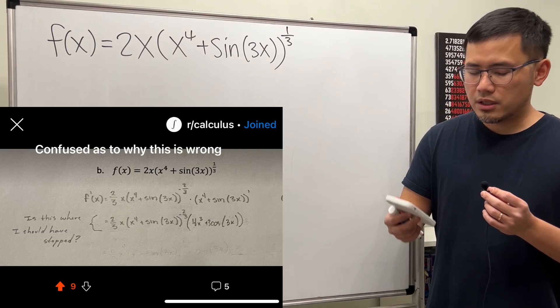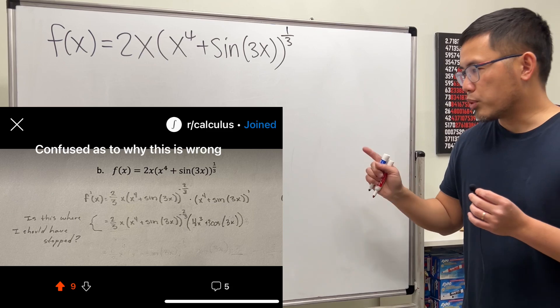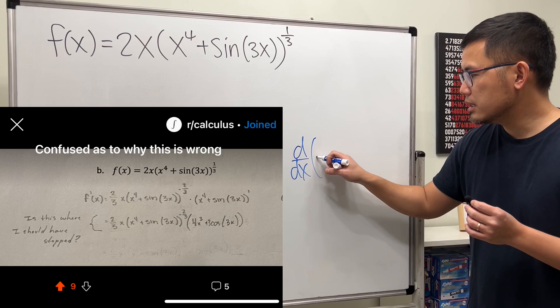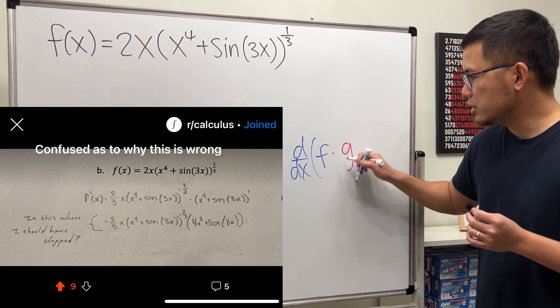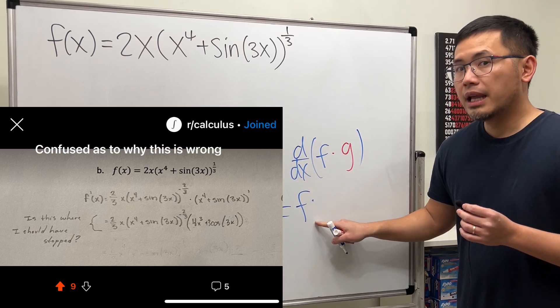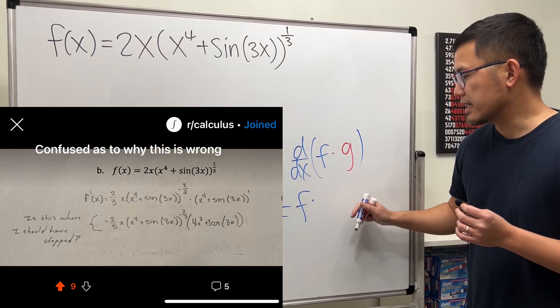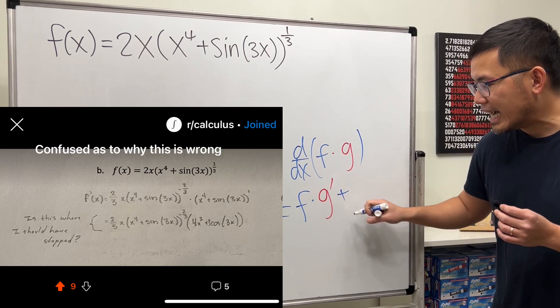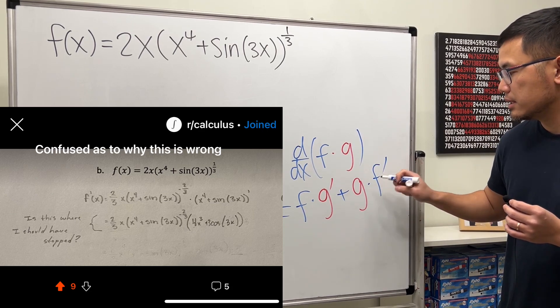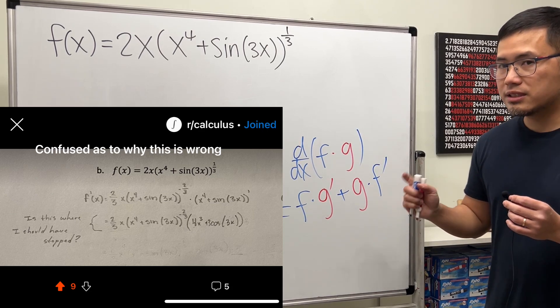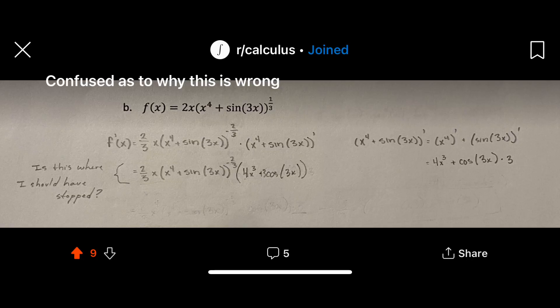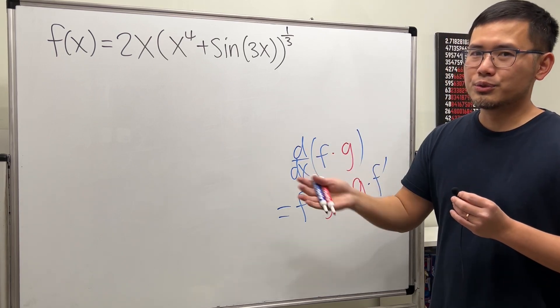So, for your answer here, remember the product rule is the following. When we take the derivative of a product of two functions, let's say f times g, we first keep the first function and multiply by the derivative of the second, which is g prime, and then we add the second function and multiply by the derivative of the first, so f prime. So it looks like you only did the first part, you didn't do the second part.